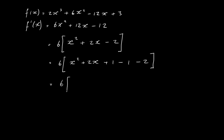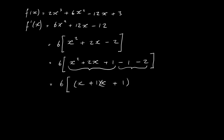Now I take the quadratic trinomial part — x squared plus 2x plus 1 — and factorise it. That gives x plus 1 all squared. The remaining constant is 1 minus 2 which is minus 3, so this part is minus 3. Multiplied by the 6 outside, we end up with 6 times x plus 1 all squared minus 3.